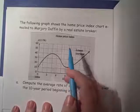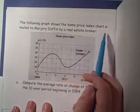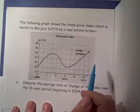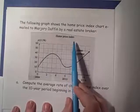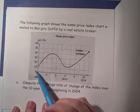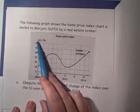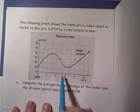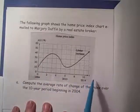Let's first read the description. It says the following graph shows the home price index chart emailed to Marjorie Duffin by a real estate broker. We have the home price index — the vertical axis, the dependent variable — represented by P of T, and the horizontal axis is our T, our independent variable.